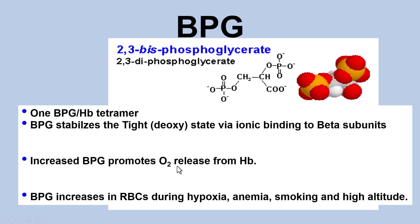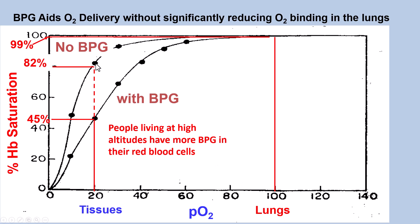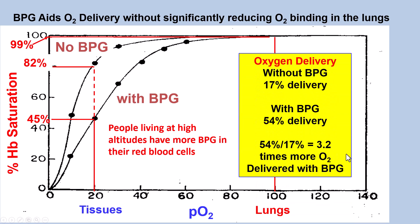Increased BPG promotes O2 release from hemoglobin. BPG increases in red blood cells during hypoxia, anemia, smoking, and high altitude. Without BPG you still get a sigmoidal curve, but hemoglobin binds oxygen very tightly. With BPG, you get a rightward shift, just as you do with CO2 and low pH. People living at high altitudes have more BPG, which aids about three times better O2 delivery, giving higher tissue oxygenation and better metabolism.